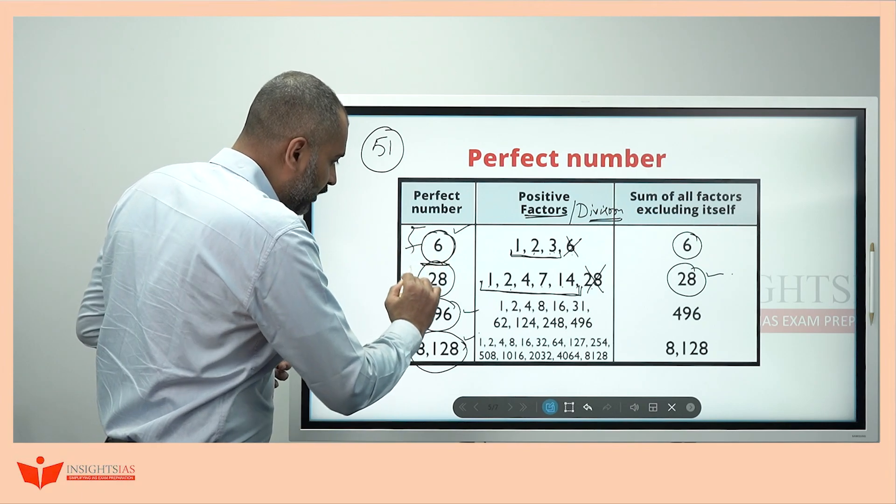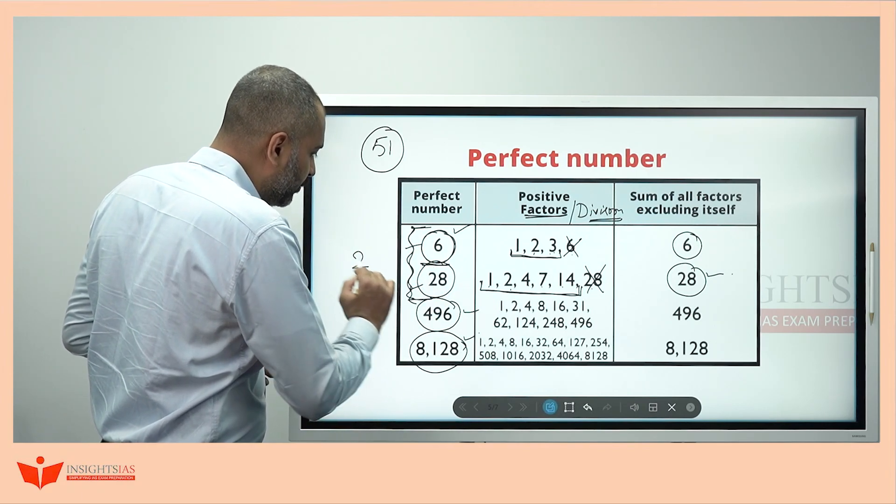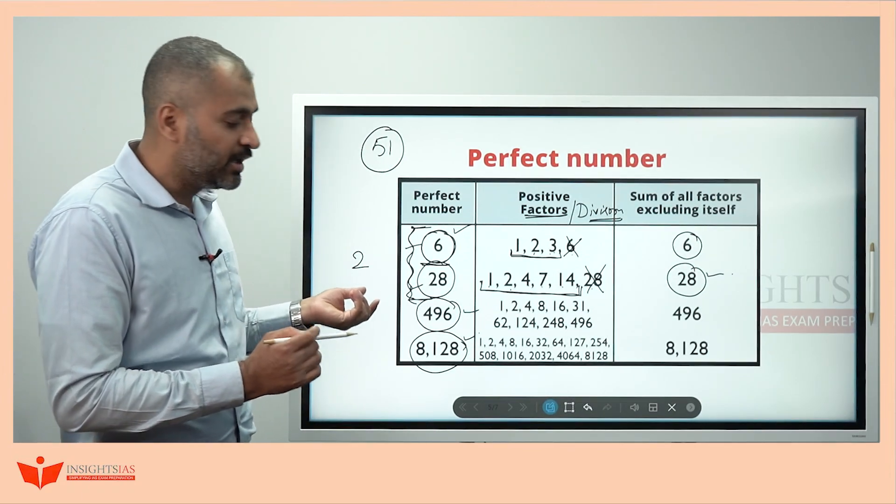And, from 1 to 100 or else within 100, how many perfect numbers are there? Only 2 perfect numbers are there. Anything can be a question here. He can give some conditions and ask.